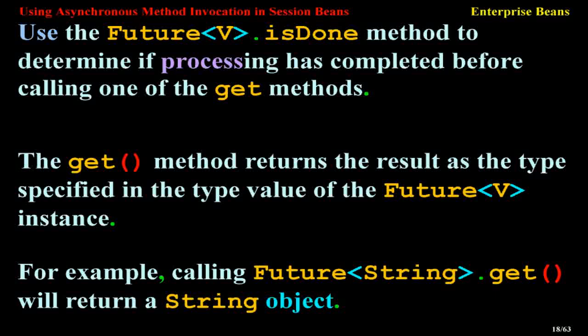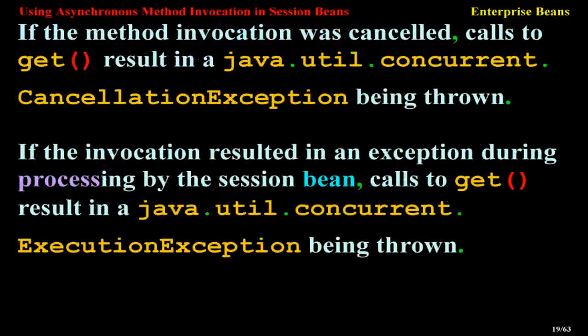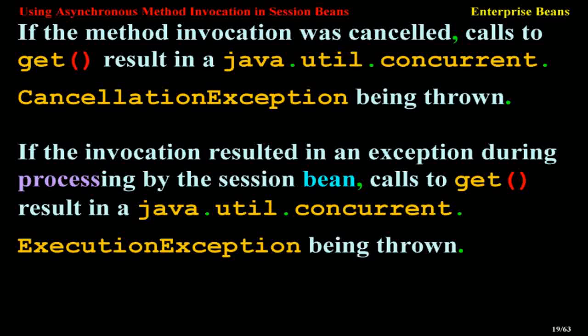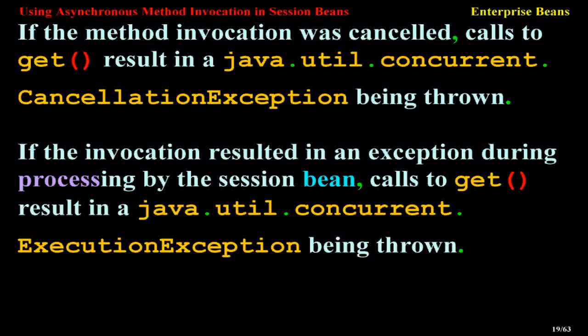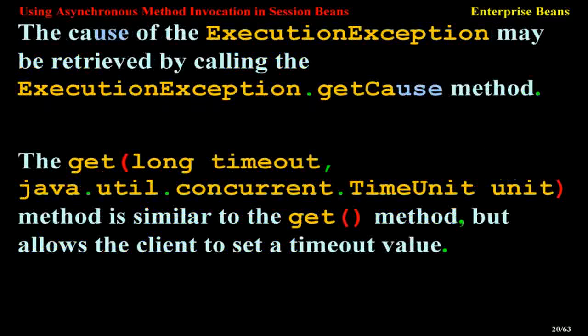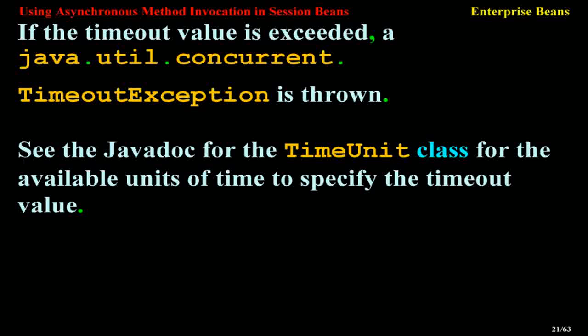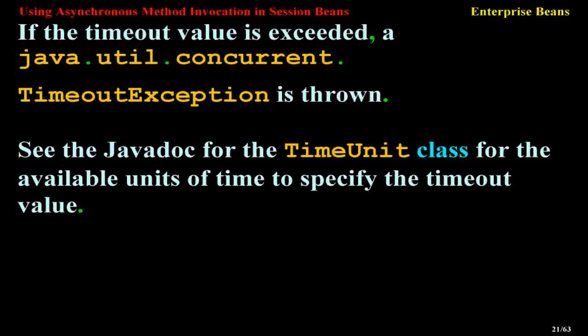The get() method returns the result as the type specified in the type value of the Future<V> instance. For example, calling Future<String>.get() will return the String object. If the method invocation was cancelled, calls to get() result in a java.util.concurrent.CancellationException being thrown. If the invocation resulted in an exception during processing, calls to get() result in a java.util.concurrent.ExecutionException being thrown. The cause may be retrieved by calling executionException.getCause(). The get(long timeout, java.util.concurrent.TimeUnit unit) method is similar but allows the client to set a timeout value; if exceeded, a java.util.concurrent.TimeoutException is thrown.